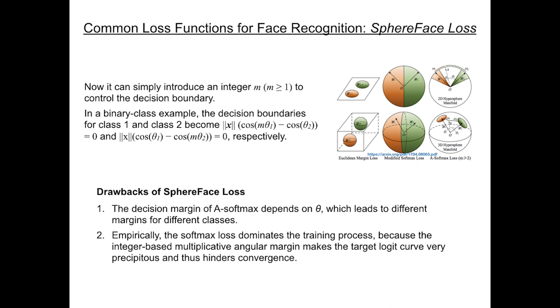Secondly, the decision margin of A-Softmax depends on theta, which leads to different margins for different classes. As a result, in the decision space, some interclass features have a larger margin while others have a smaller margin, which reduces its discriminating power.